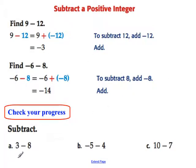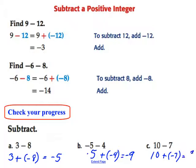I hope you tried those on your own. 3 minus 8 is the same as 3 plus a negative 8, which is equal to negative 5. Negative 5 minus 4 is the same as negative 5 plus a negative 4, and that one gives us negative 9. And lastly, 10 minus 7 is 10 plus a negative 7, which is positive 3.